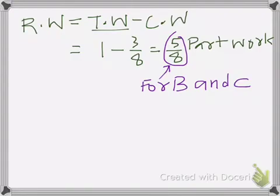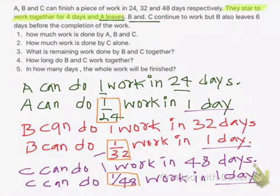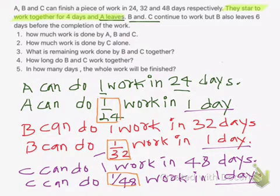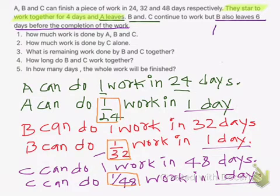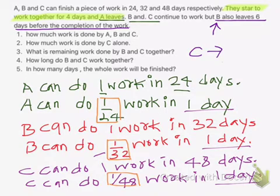From our question, B also leaves the work 6 days before the completion of the work. This means we can assume that as B has left, C has worked alone at the last 6 days.